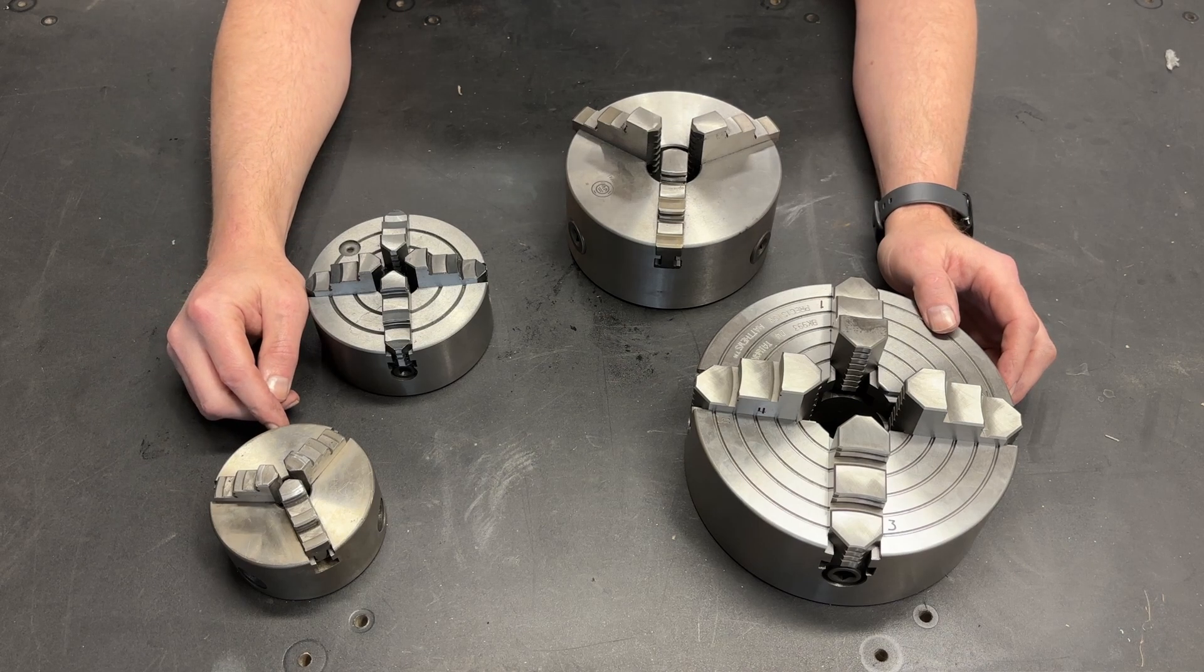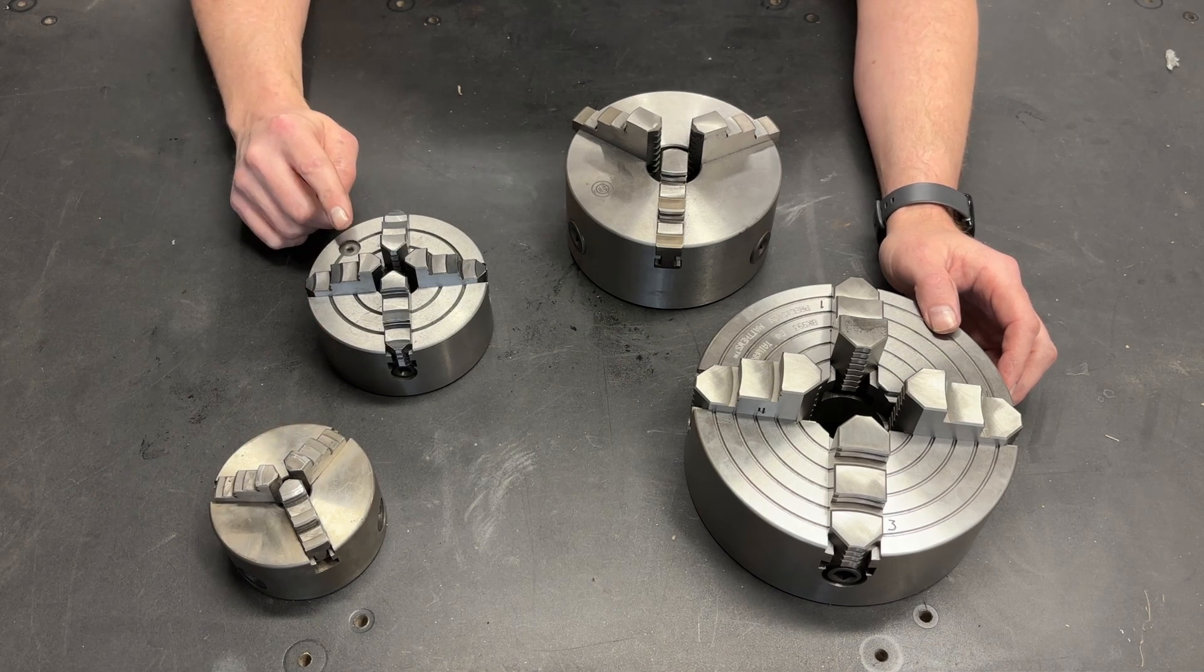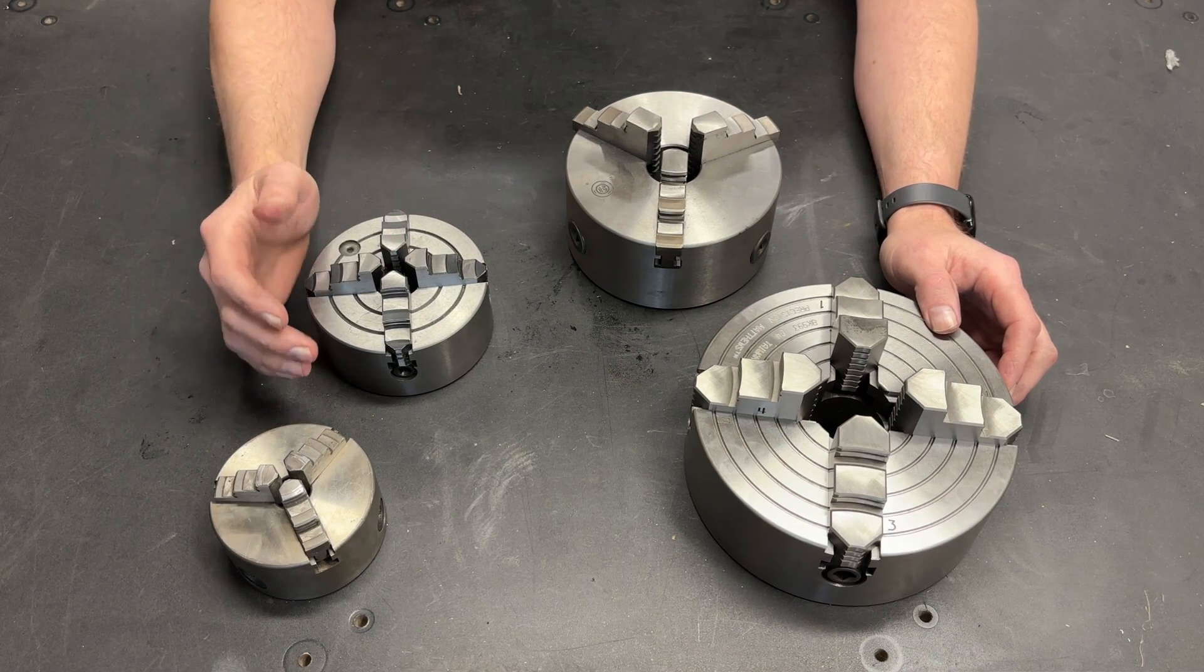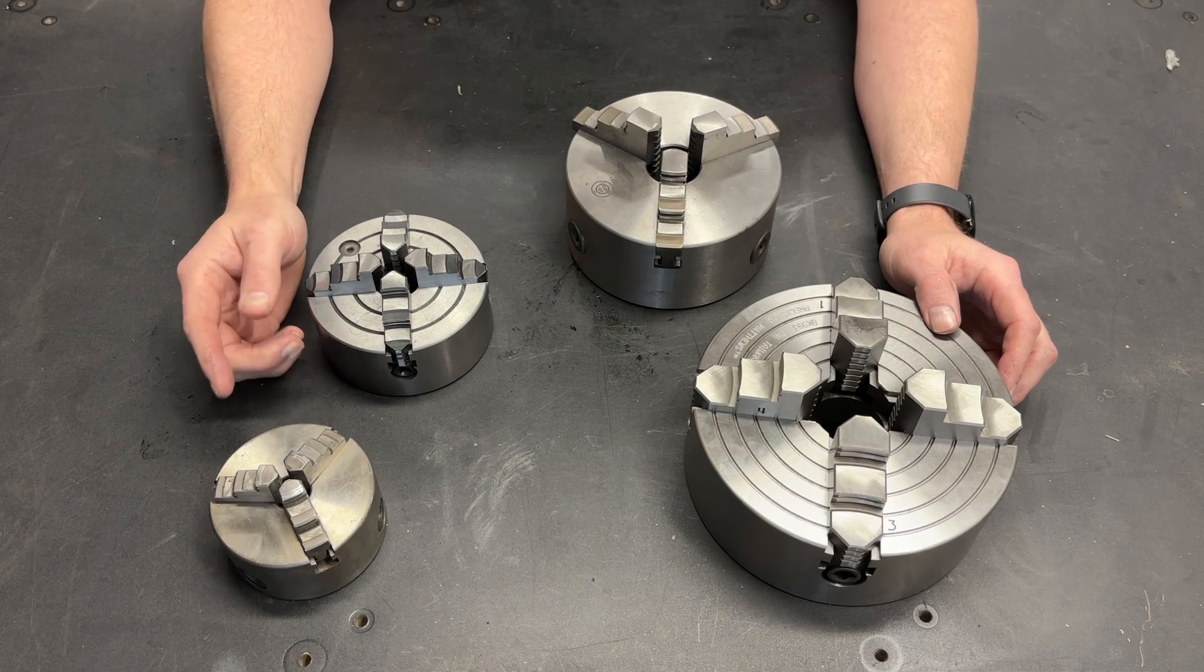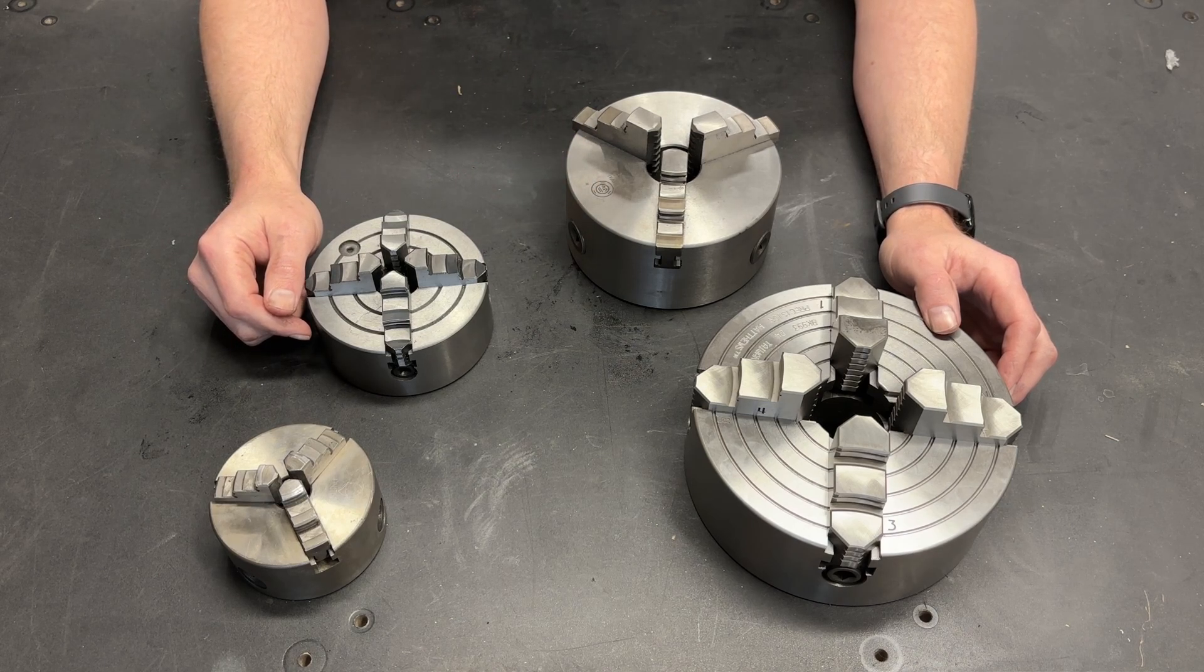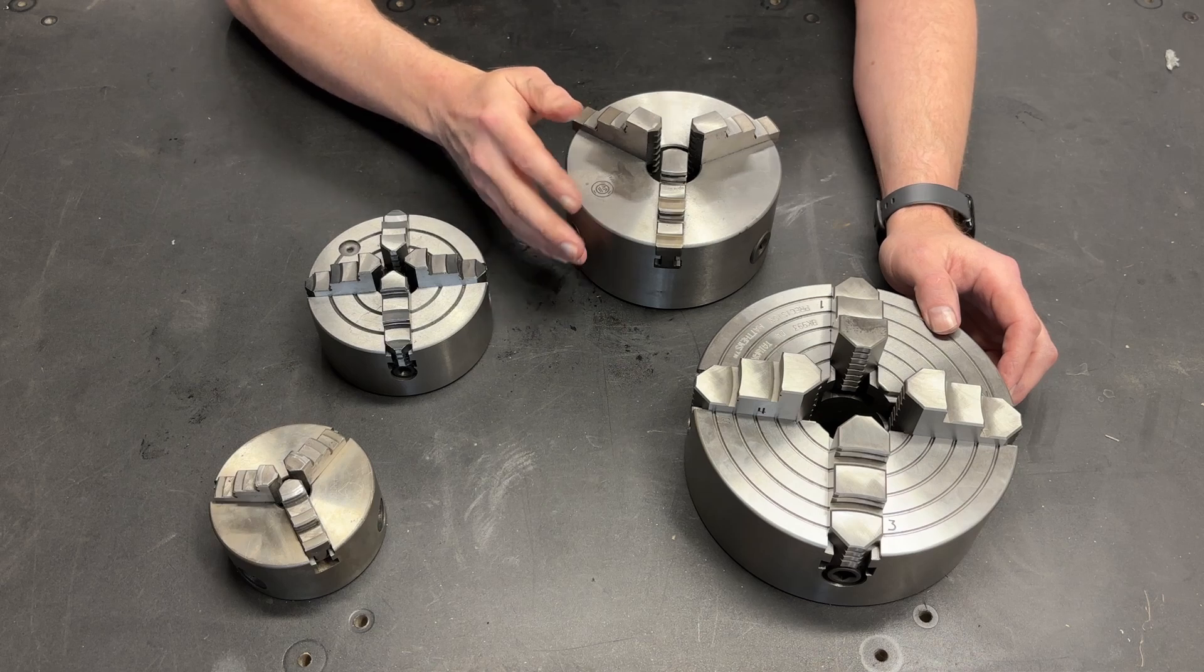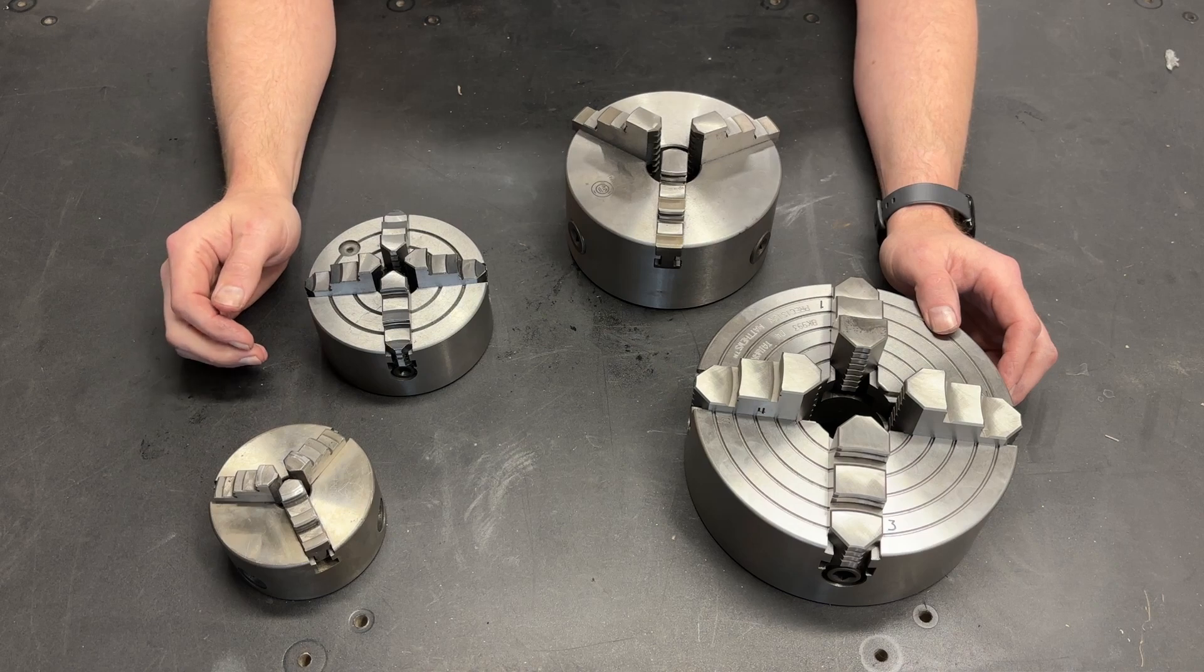When I had that mill lathe combo that I spoke of earlier, it came with a four inch chuck. I upgraded to a five inch chuck and that opened up a huge world to me. It gave me a slightly bigger throat, at least for the depth of the chuck. And it allowed me to hold slightly bigger work. Now, had I gone to a six inch, that likely would have been the max that that machine could have handled. And I really think I would not have been gaining anything other than wear and tear on my machine for that particular lathe to go from a four inch to a six inch. The five inch was about the perfect size chuck.